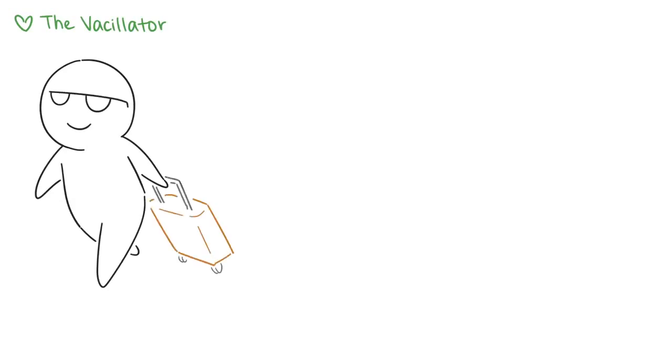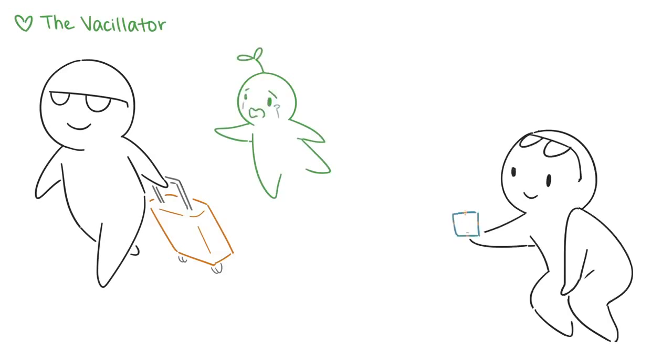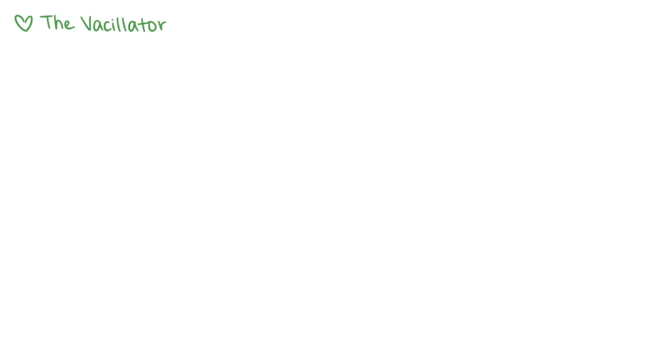4. The vacillator. The vacillator often grows up with an unpredictable parent. As children, vacillators learned that their needs aren't their parent's top priority. Without consistent affection from their parent, vacillators develop a deep fear of abandonment. But when the parent finally feels like giving their time and attention to them, vacillators are usually too angry and tired to receive it. As vacillators enter adulthood, they try to find the consistent love they were deprived of as children.